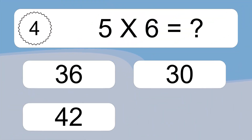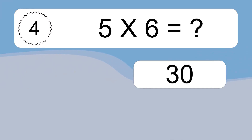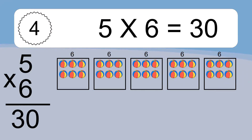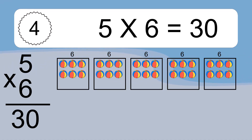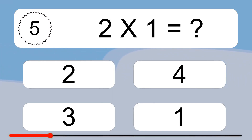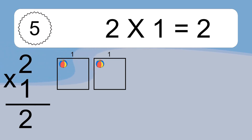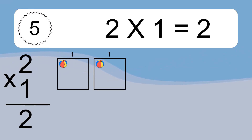5 times 6 equals what? We have 5 boxes, and each box has 6 colorful balls inside. If you count all the balls in all the boxes together, you will have 5 times 6 balls. This equals 30 balls. 2 times 1 equals what? 2 times 1 equals 2. We have 2 boxes, and each box has 1 colorful ball inside. If you count all the balls in all the boxes together, you will have 2 times 1 balls. This equals 2 balls.